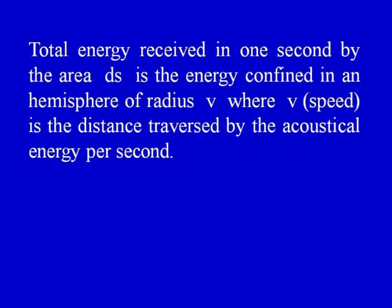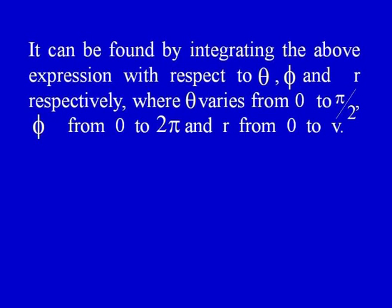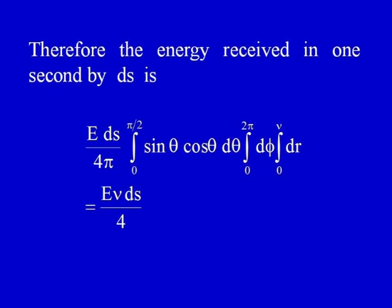The total energy received in one second by area dS is the energy confined in a hemisphere of radius v (the speed, i.e., the distance travelled by the wave per second). Integrating over θ from 0 to π/2, φ from 0 to 2π, and r from 0 to v, the energy received per second by area dS is: (E·dS / 4π) × (1/2) × 2π × v = E·v·dS / 4. The intensity of such diffuse sound at the walls is therefore E·v / 4.